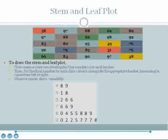For the value of 7, as another example, the values in the bucket are 76, 76, and 79, so we list two 6s and a 9 alongside the stem.